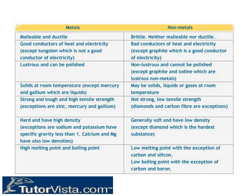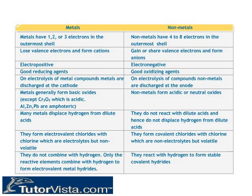Metals and non-metals have different physical properties, and they also have different chemical properties. These properties are stated here in the form of a table.